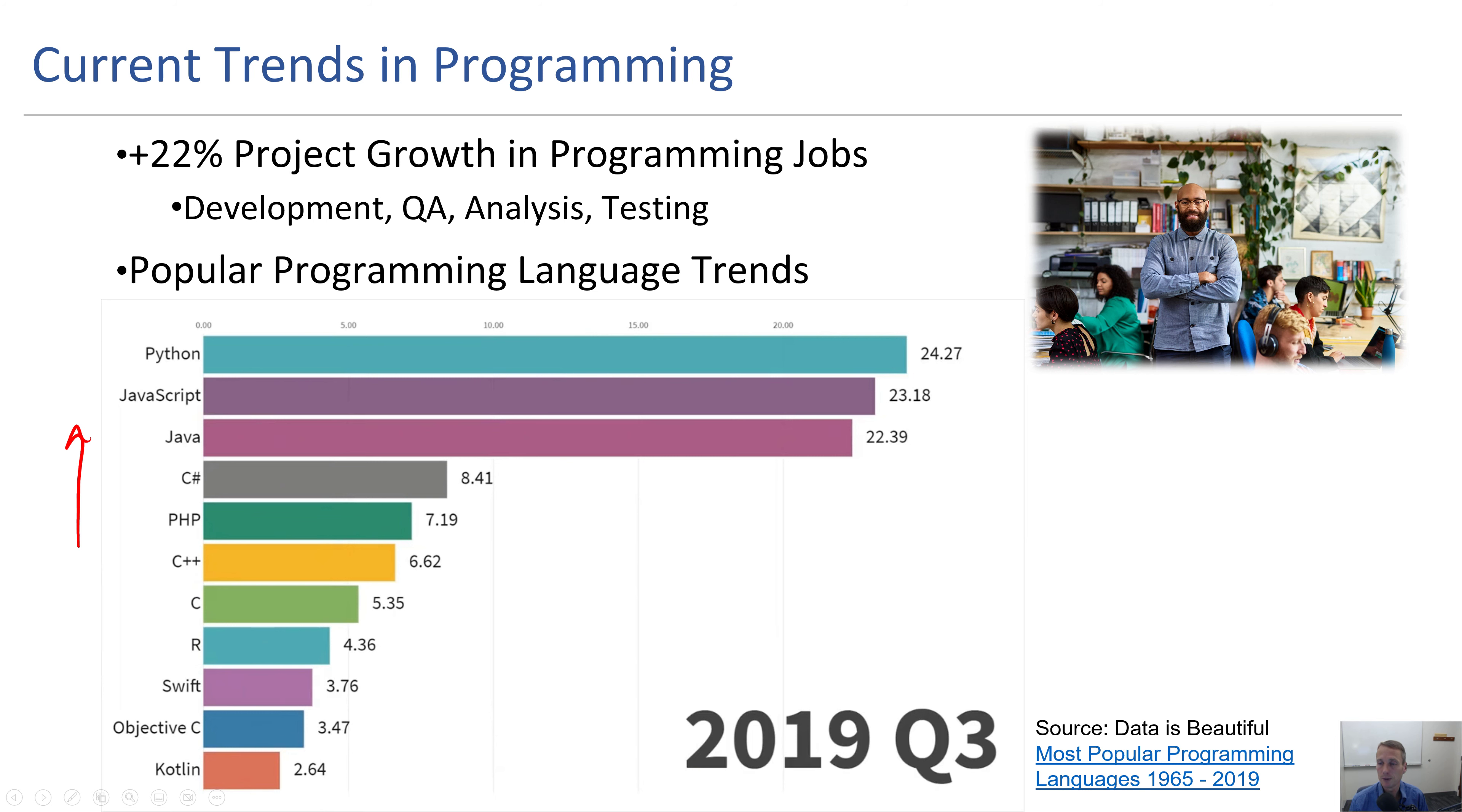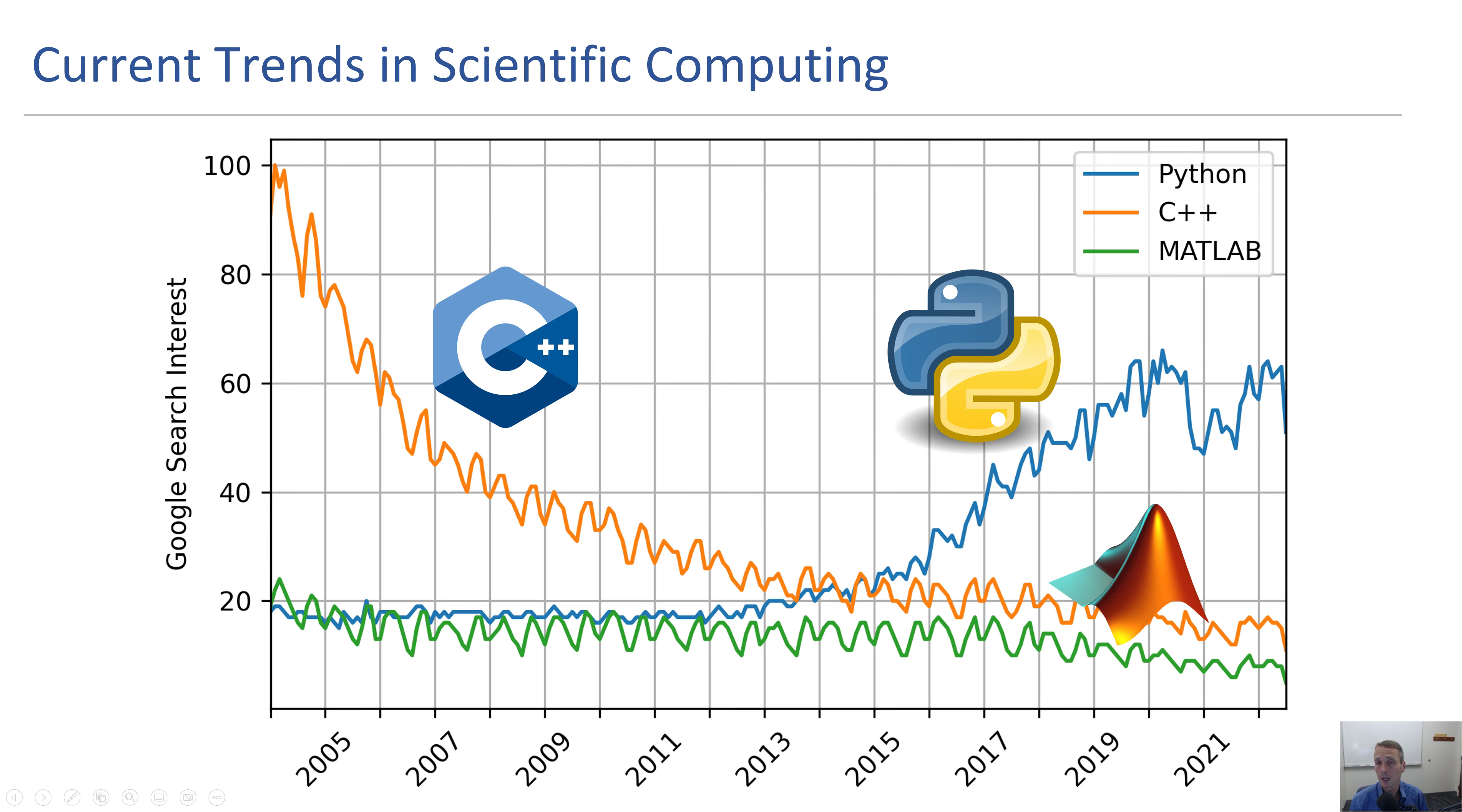In terms of scientific programming languages we see Python really emerging from some of these others. You see C++ and Fortran much earlier, it had its decline, was replaced by others and then you see the emergence of Python.